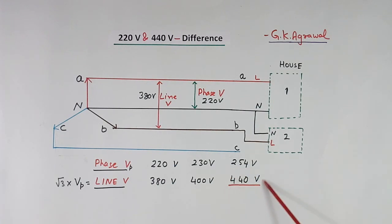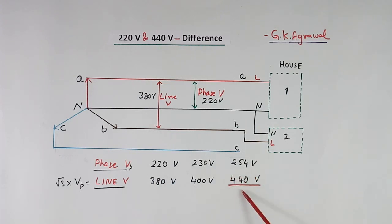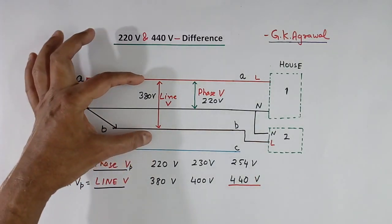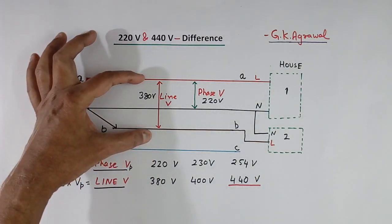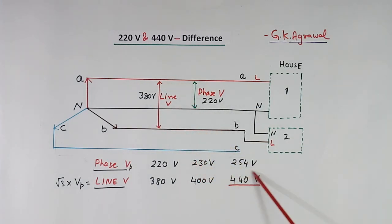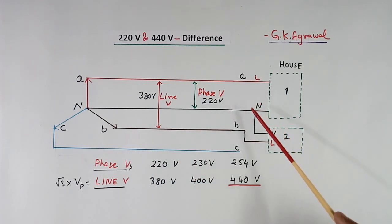That is what we have seen. On many transformers in the lane, you will see '440V danger.' That is this voltage, because if we put our finger across two lines we get a shock of 440V — that is why they write it. But in your house, you get 220V line-to-neutral voltage.